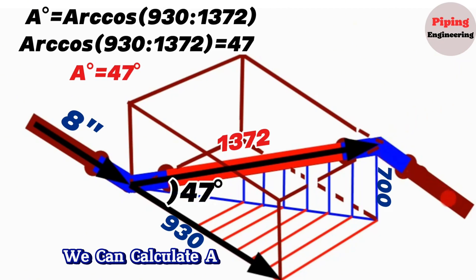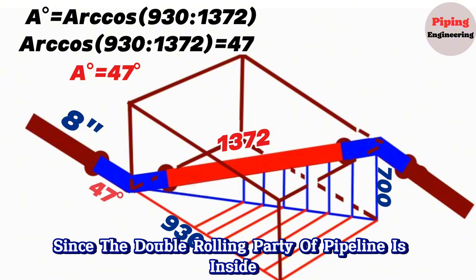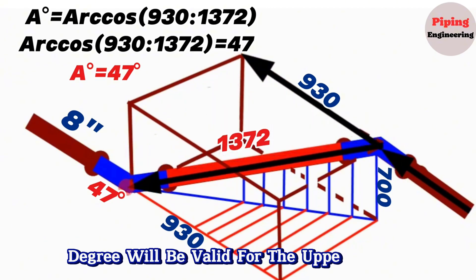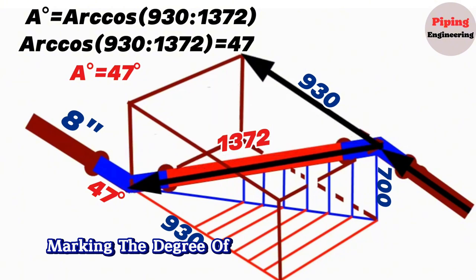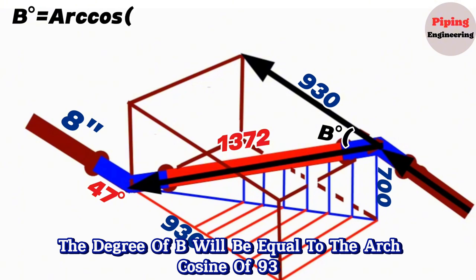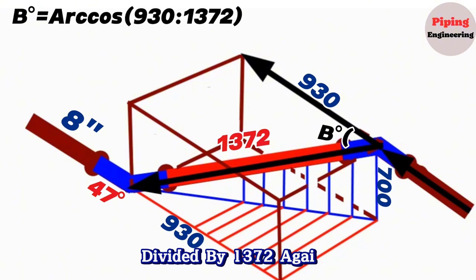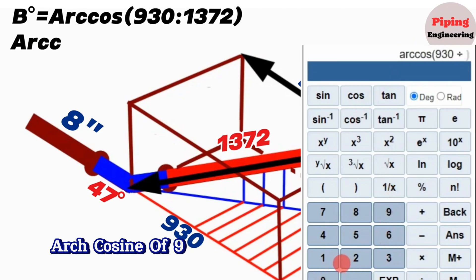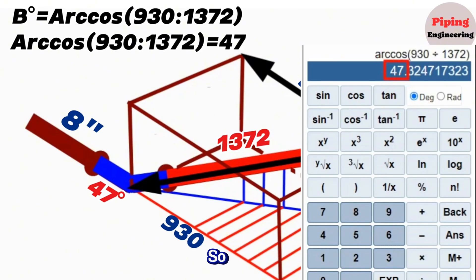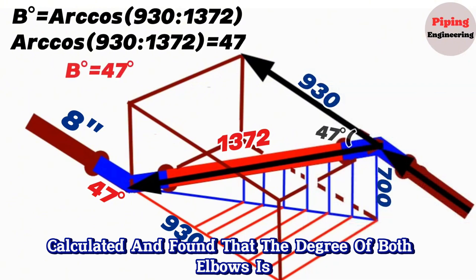With the same method we can calculate the above-elbow degree also. Since the double rolling portion of the pipeline is inside the parallelogram, the extension of the upper elbow coincides with the opposite side of the parallelogram, and the calculation for the below-elbow degree is valid for the upper elbow as well. Marking the degree of the above-elbow with letter B, the degree of B also equals arc cosine of 930 divided by 1372, which equals 47°. So the degree of both elbows is 47 degrees.